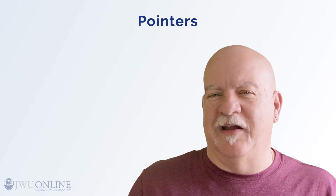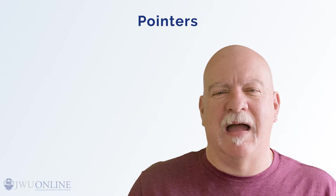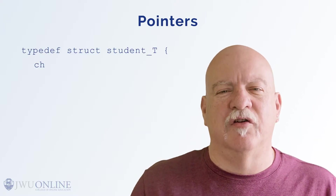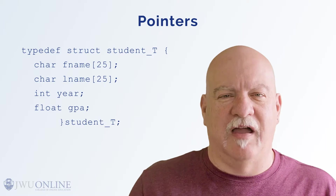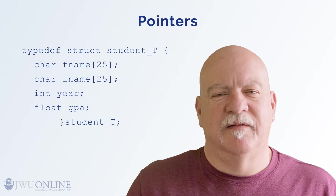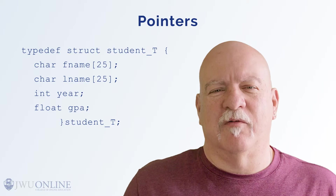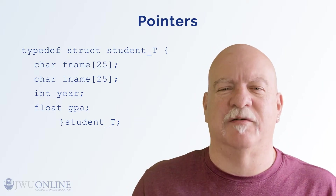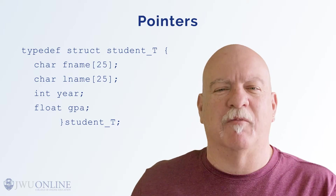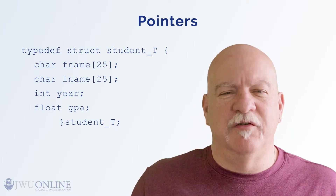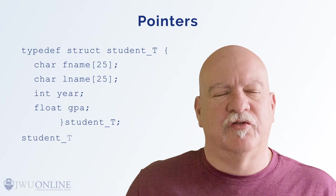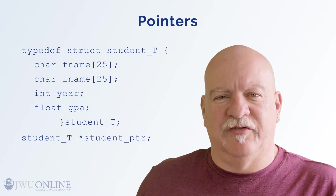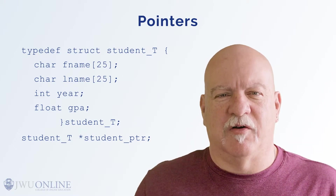First, let's define a typedef to create the mapping for our new variable type. Let's use the student_t type that we used from the last lesson. Inside the main program, we need to create a pointer for this type of variable so that malloc has a place to return the pointer to the new memory baby. We do that with the command: student_t *student_pointer;